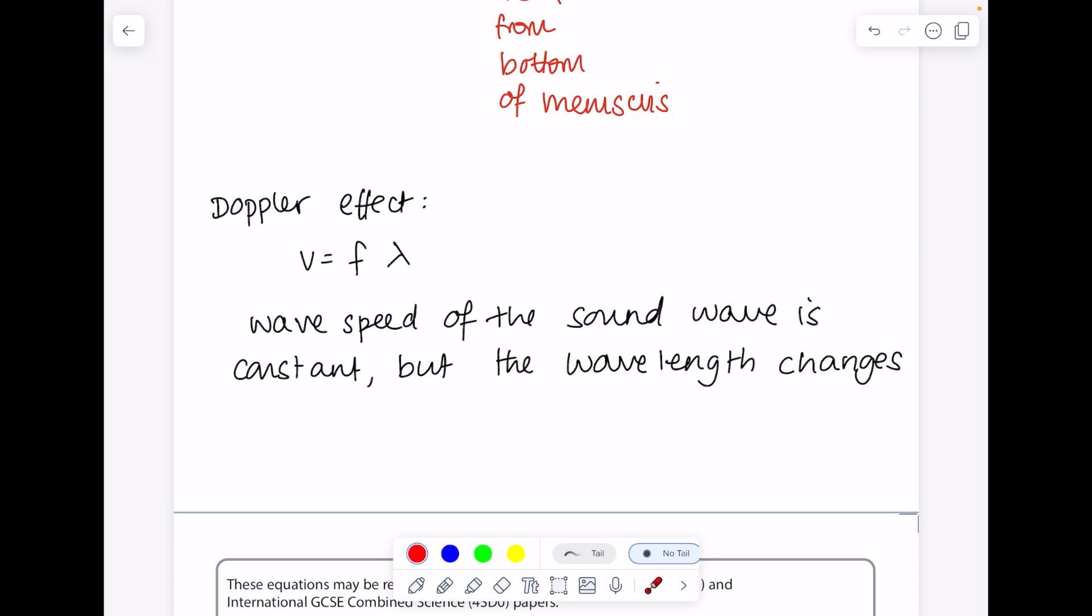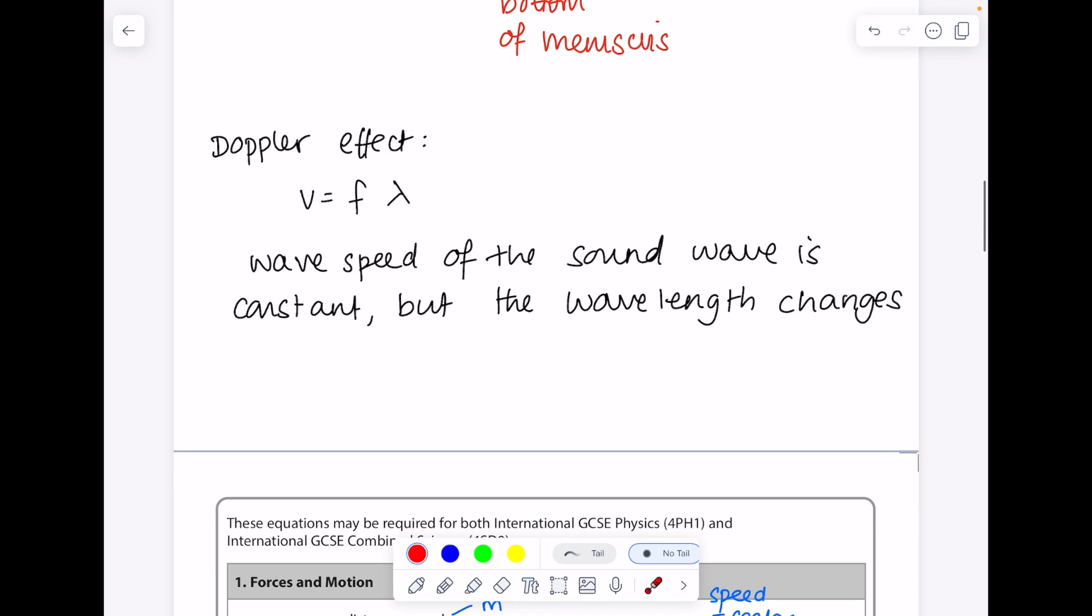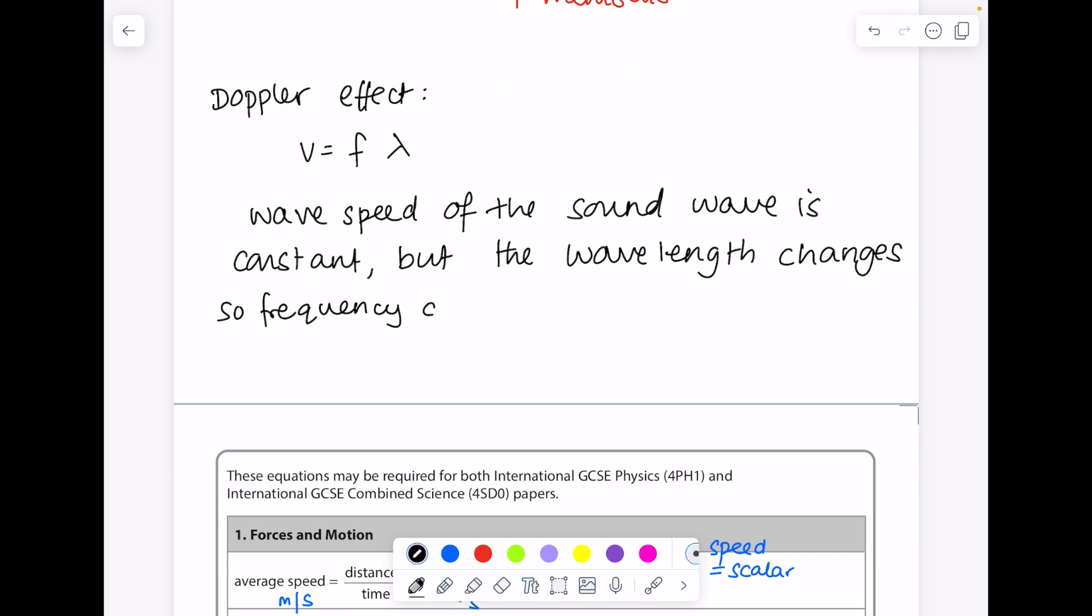So based on the fact that v equals f lambda, if this number stays the same, this number for example is increased, that must mean that that frequency has decreased, hence why you hear a lower pitch. So for example, increased wavelength means decreased frequency, and a lower pitch sound is heard.